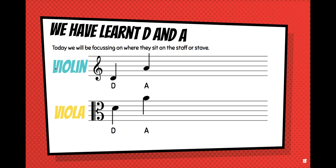If I'm playing violin, D sits here in a space underneath the stave, and I know that my clef is called a treble clef. If I'm playing A as a violin player, to read A it's in the second space. Remember, we count from the bottom up, so this is the first space and this is the second space.